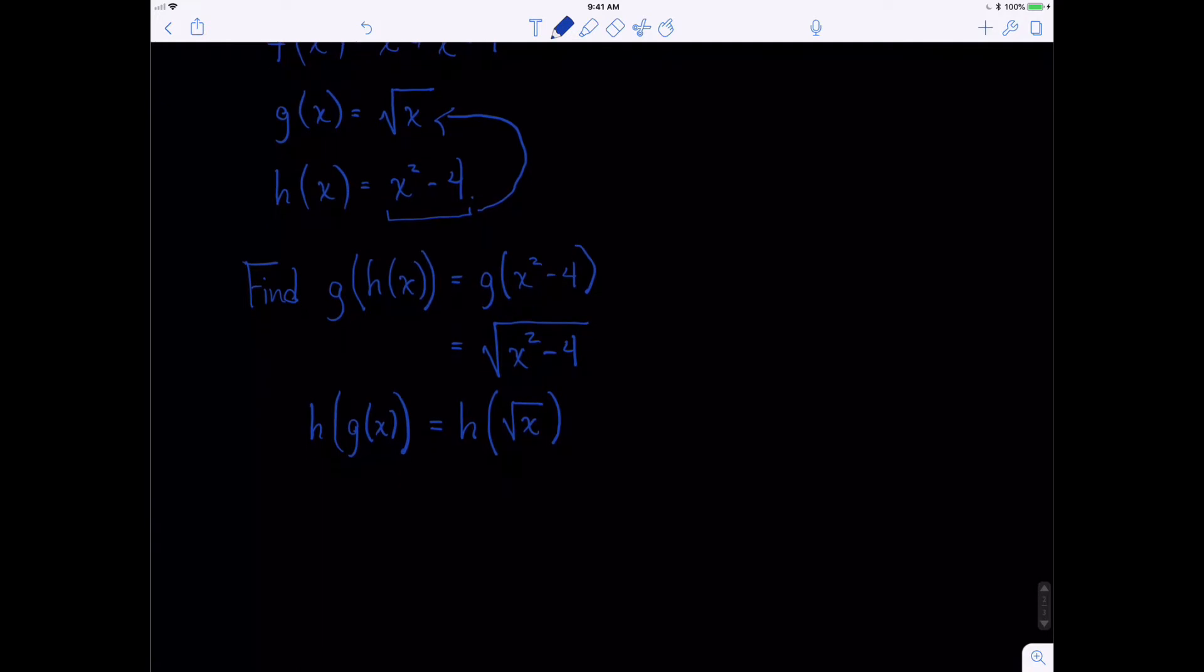Now what we do is we put the square root of x into h. So that becomes the square root of x squared minus 4. And we can simplify this by the square root of x squared is simply x. And so h of g of x is x minus 4.